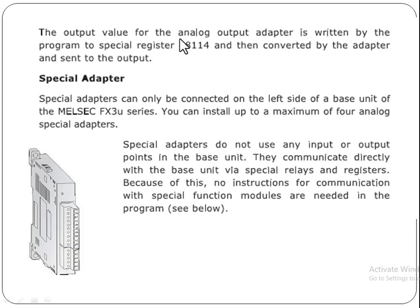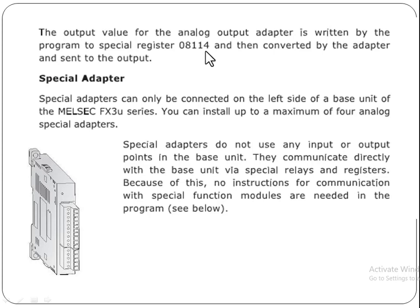The output values for the analog output adopter are written by the program to special register D8114 and then converted by the adapter and sent to the output. The output adopter for analog values writes its value in special register D8114 and then converts this value to the analog value as required. It converts it to the analog value normally if it is installed on the output side, and then it is sent to the output point to execute these values.